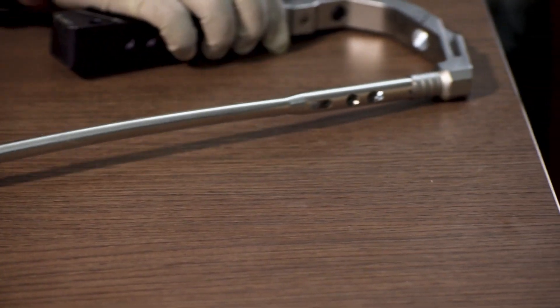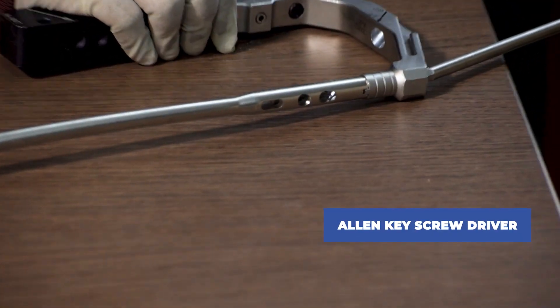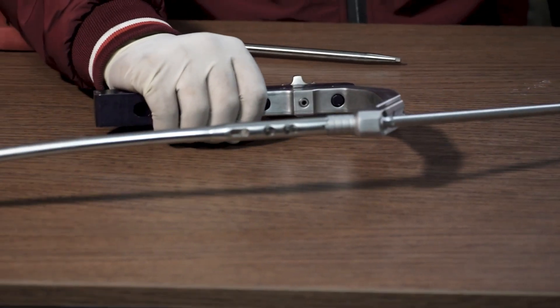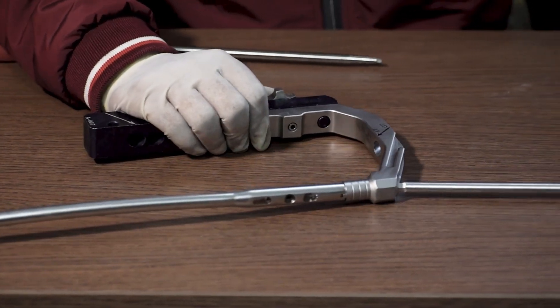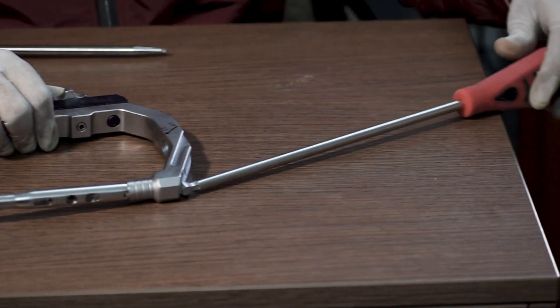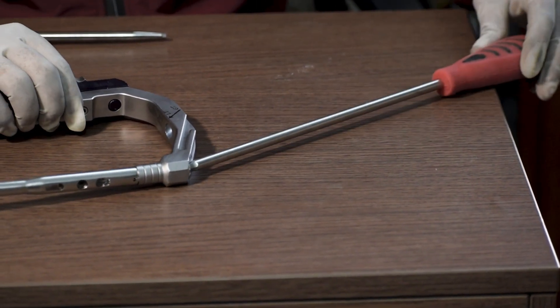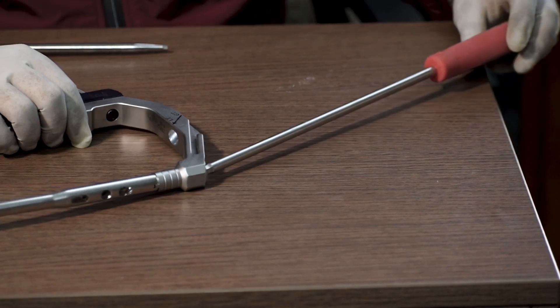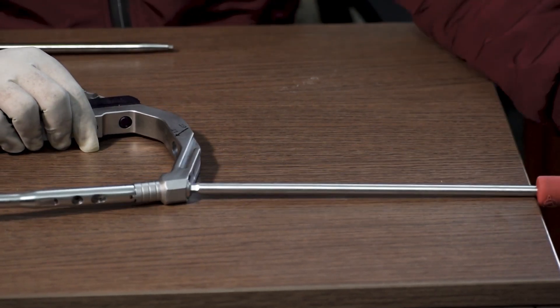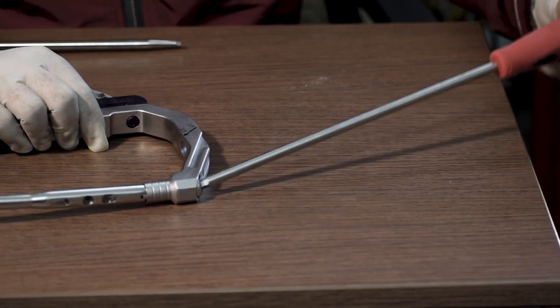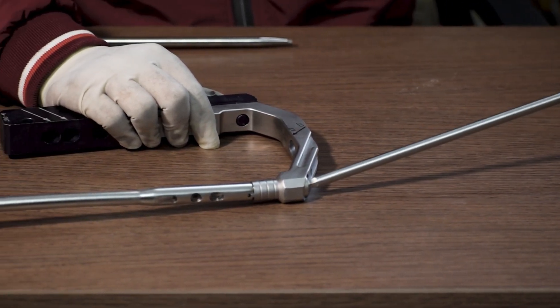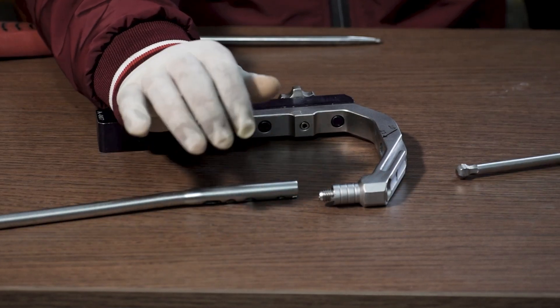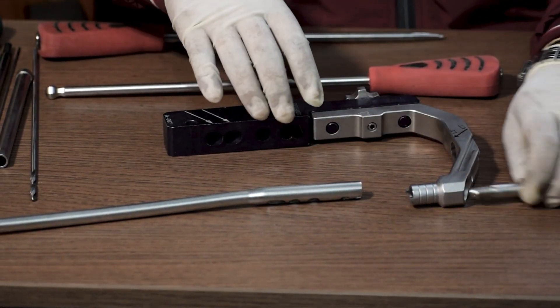After the fixation is done, we will use an Allen key screwdriver to remove the nail from the jig by loosening the conical bolt. The specialty of an Allen key screwdriver is you can actually use this screwdriver from different angles and it makes it easier to operate. As you can see here, any angle the screwdriver can perform. The nail stays back in the body of the patient and we remove the jig.